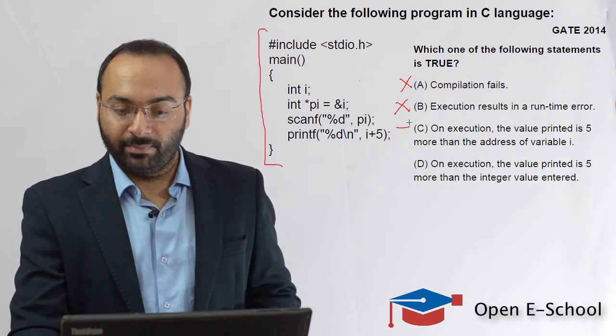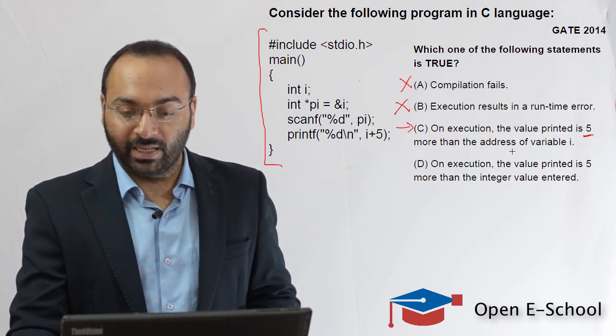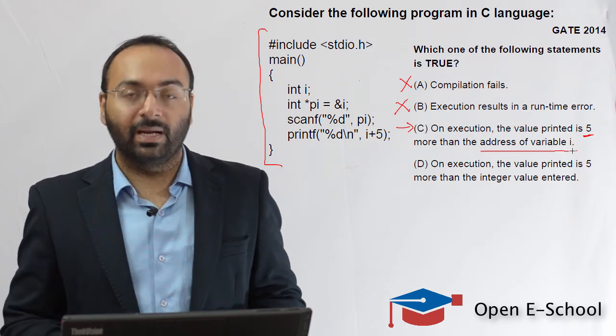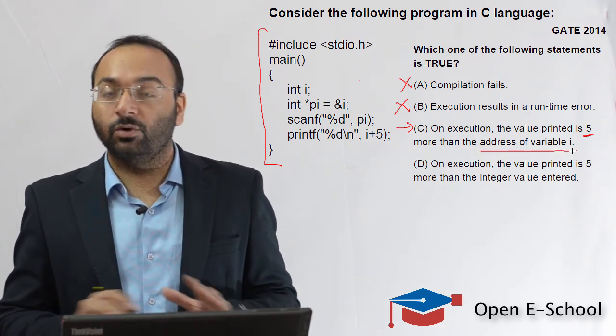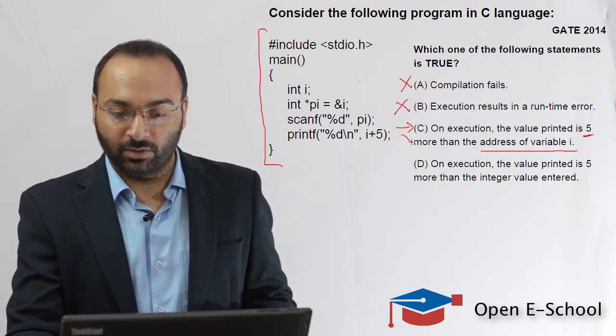The third statement is a bit confusing. It says on execution, the value printed is 5 more than the address of variable i. So we just noticed that it's not 5 more than the address of i. It's 5 more than the value of i. So this statement is also wrong.